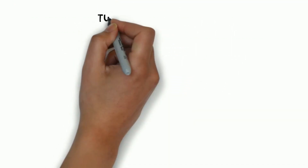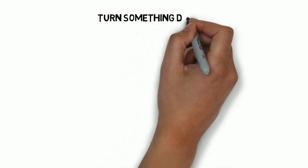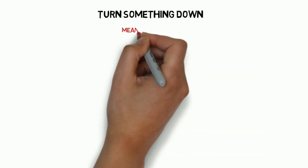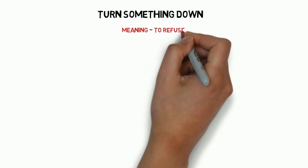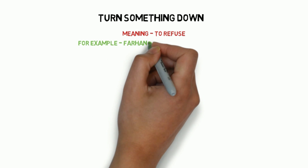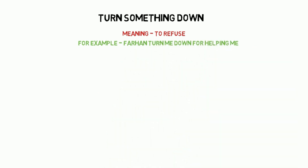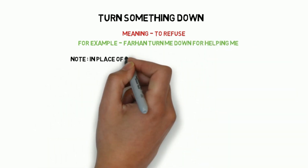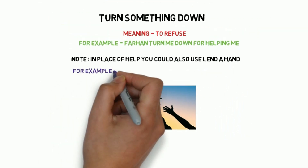Next one is 'turn something down.' Turn something down ka matlab hota hai to refuse — kisi ko mana karna. For example: Farhan turned me down for helping me — or, using another expression, for lending me a hand.